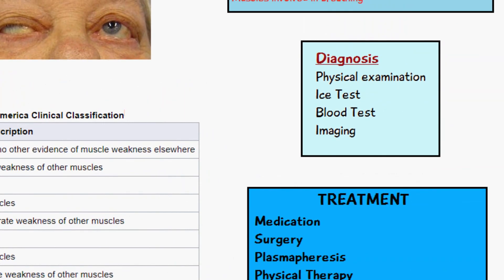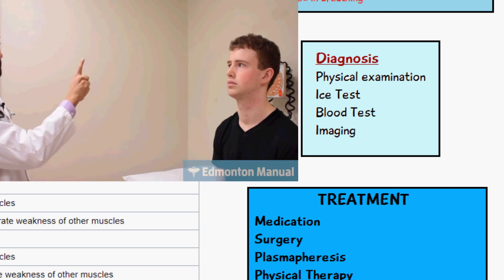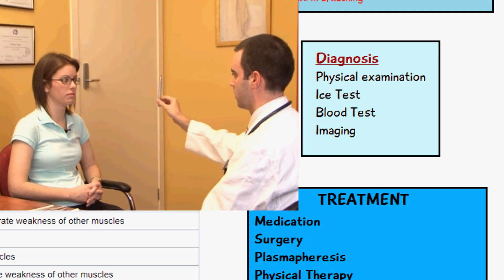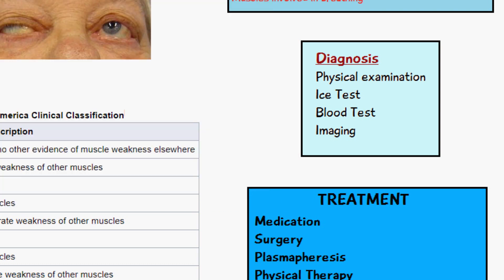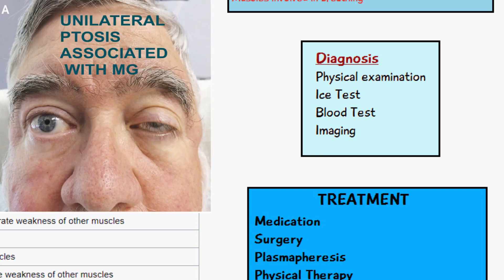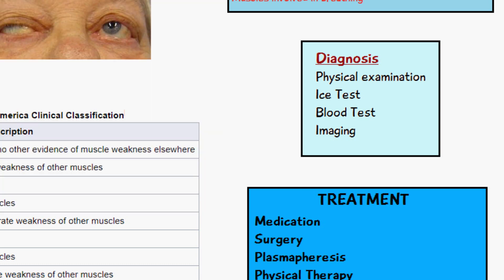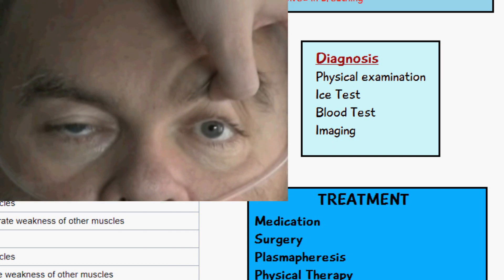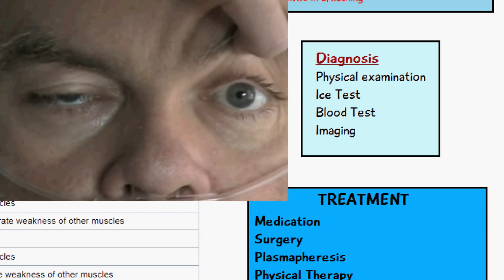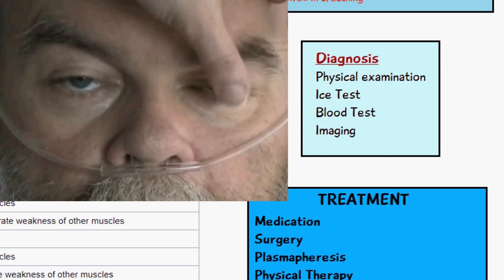Diagnosis of myasthenia gravis can be done through a few methods. A physical examination involves checking for facial weaknesses and particularly examining the eyes. A neurological test called the curtain sign is a key indicator of myasthenia gravis. In cases of unilateral ptosis, when you manually lift the drooping eyelid, the brain sends a signal to the normal eye telling it to relax, so the healthy eyelid starts to droop. This result is known as the curtain sign.